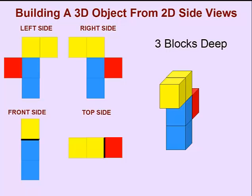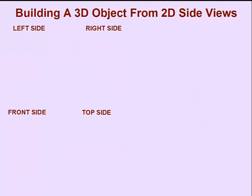This is our three-dimensional object. Always do a check from the three-dimensional object to make sure the two-dimensional side views all make sense. Let's try a tougher example.